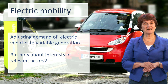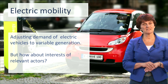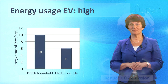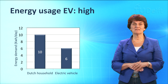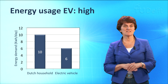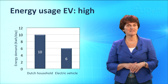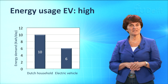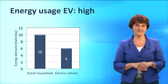But how can that be done, taking into account the different interests of the relevant actors? Electric mobility is in principle greener and, depending on the source of the electricity production, electric vehicles can produce less CO2 and improve air quality. An electric vehicle uses a relatively large amount of electricity. For comparison, an average household in the Netherlands uses an average of about 10 kWh per day. An electric vehicle, based on the current average travel distance per day, uses about 6 kWh per day.